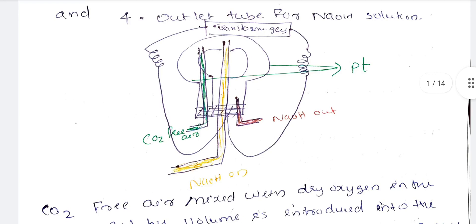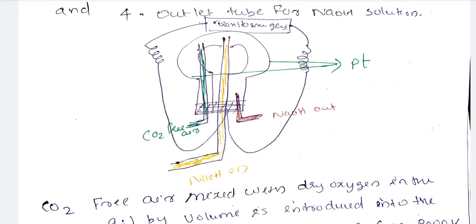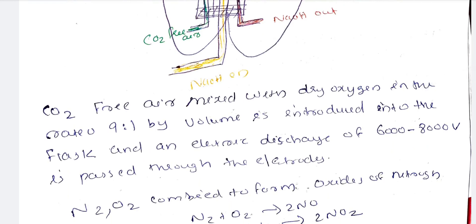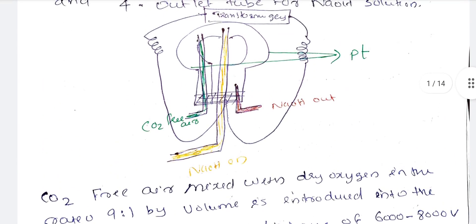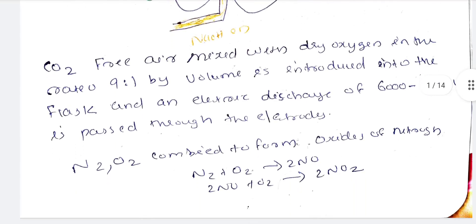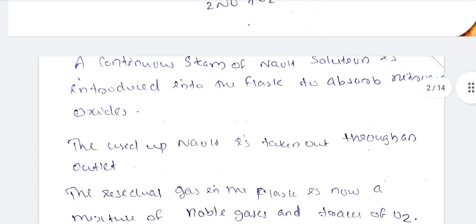CO2-free air mixed with dry oxygen in the ratio 9:1 by volume is introduced into the flask. An electric discharge of 6000 to 8000 volts is passed over the electrodes. N2 and O2 combine to form nitrogen oxides: N2 + O2 → 2NO.